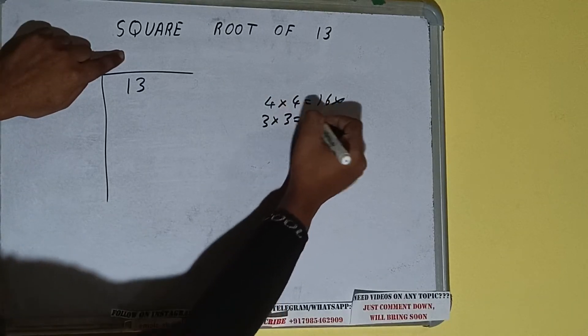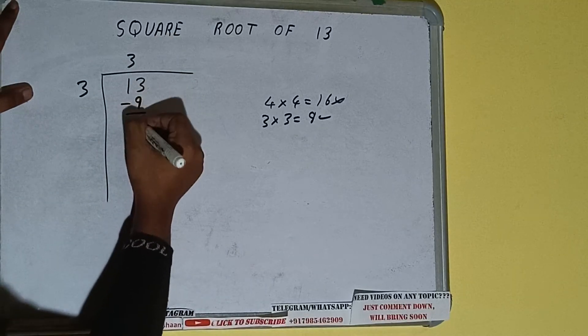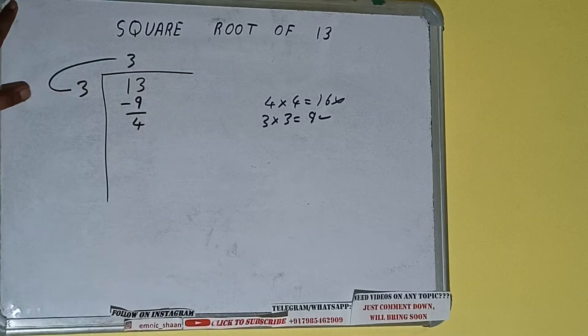So 3 here and 3 here. 9 subtract, 4 will be left. We did 3 into 3, so add both. So 3 plus 3 will be 6.